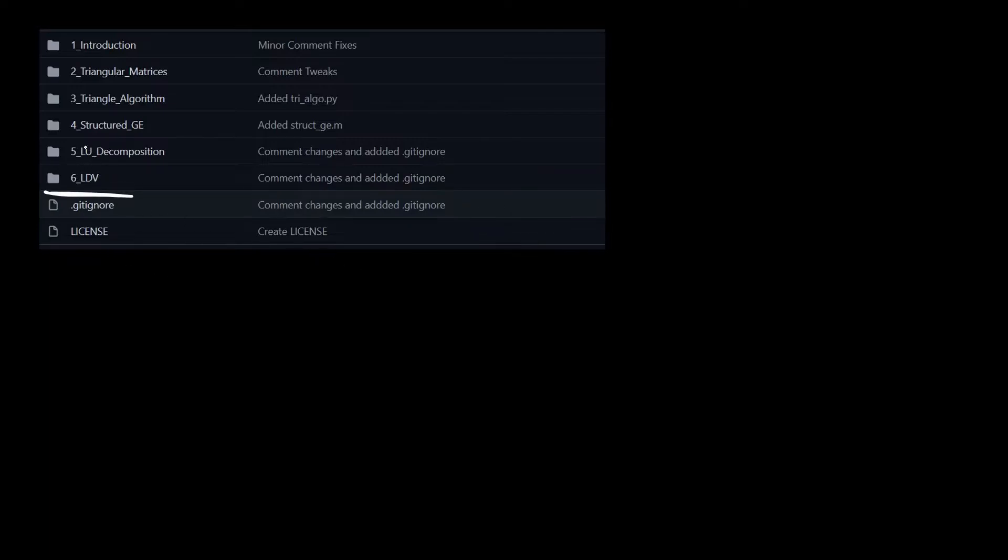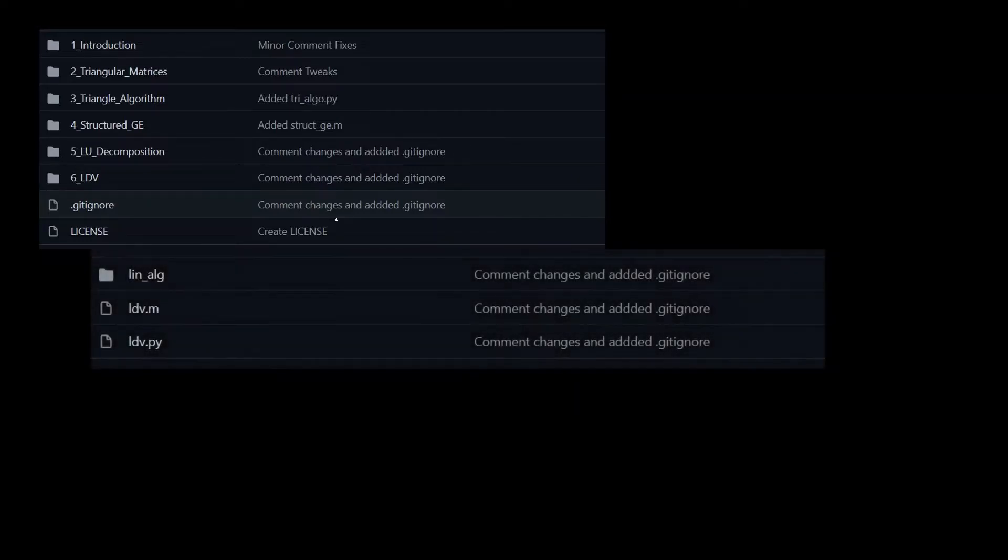You can see here's episodes five, four, three, two, and one. That's how this is structured. Inside of there, you will find the lin-alg Python package we'll be using for the Python stuff, as well as here is our octave code and then our Python main script.